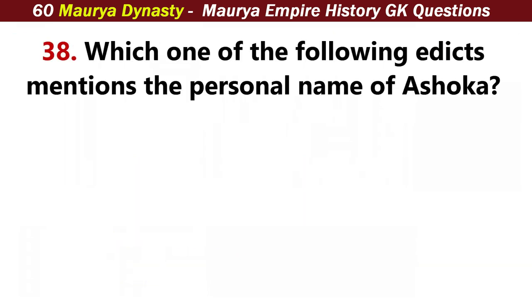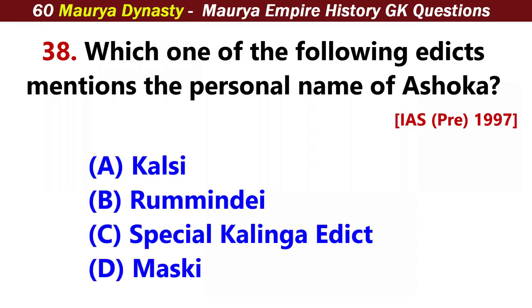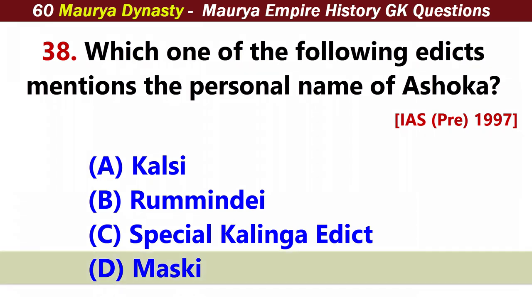Which one of the following edicts mentions the personal name of Ashoka? Answer D: Maski.